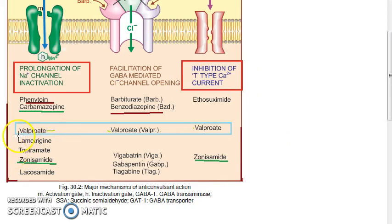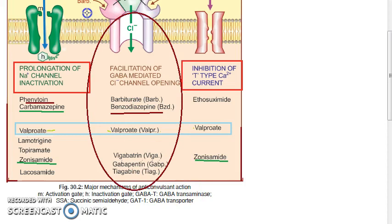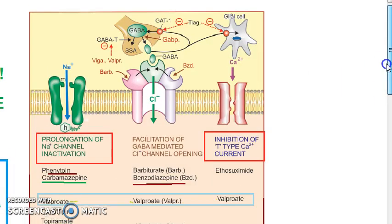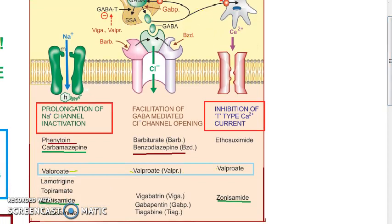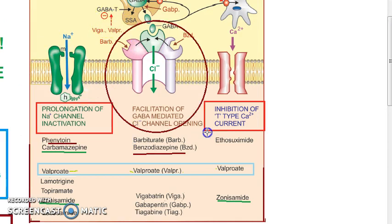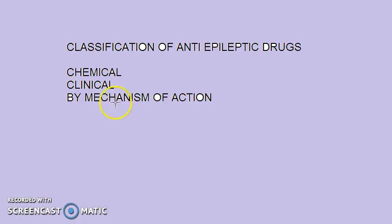The newer drugs — vigabatrin, gabapentin, tiagabine — all obviously come under GABA-mediated mechanisms. However, pregabalin is missing from the GABA group, so note that. To close: there are three ways of preventing epilepsy — prolongation of sodium channel inactivation, facilitation of GABA-mediated chlorine channel opening, and inhibition of the T-type calcium current. All three mechanisms make neurons fire less.